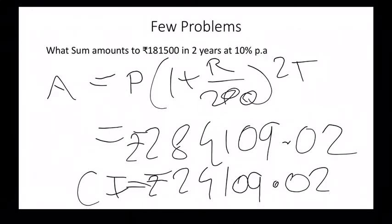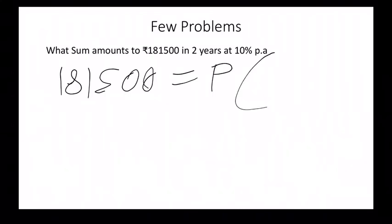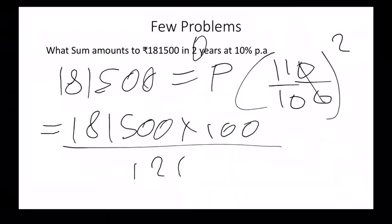Next: What sum amounts to 1,81,500 in two years? For that, you need to use simple equations. We take 1,81,500 as the amount equal to principal as the variable, plus 111 by 10 raised to 2, because it is 2 years. The answer would be 1,50,000 rupees was taken by the borrower.